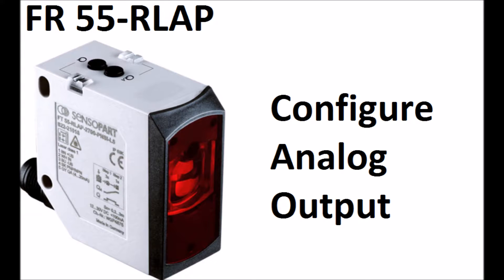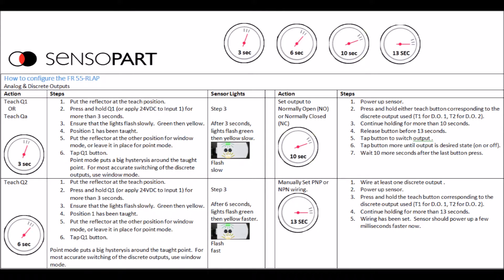Like most of our sensors, you teach this one in two steps. You press and hold the teach button for more than three seconds, and then the second step is tap the teach button. With this one, there's various functions depending on how long you hold the teach button. The points are 3, 6, 10, 13, and 20 seconds, and the lights will flash slow and fast to tell you which stage you're in. It's not as complicated as it sounds.